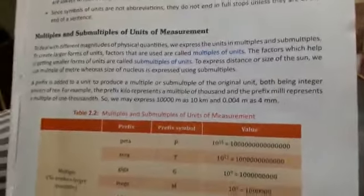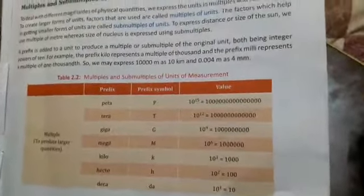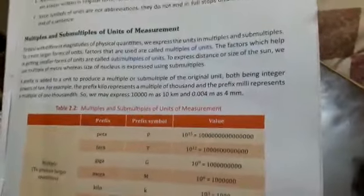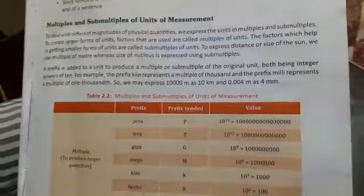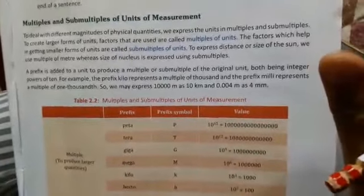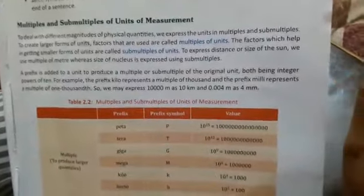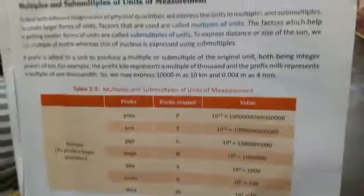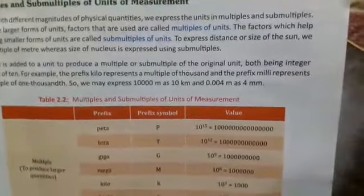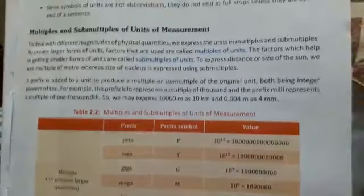A prefix is added to a unit to produce a multiple or sub-multiple of the original unit, both being larger power of 10. For example, the prefix kilo represents a multiple of thousand. So we may express 10,000 meters as 10 kilometers, and 0.004 meter as 4 mm (millimeters). So here you have learned that the multiples are the bigger units from the standard unit. For example, length: what is the SI unit of length? Meter. When we are measuring any length in kilometers, that will be multiple. And when the unit is smaller than the SI unit, less than meter, that is called sub-multiple.